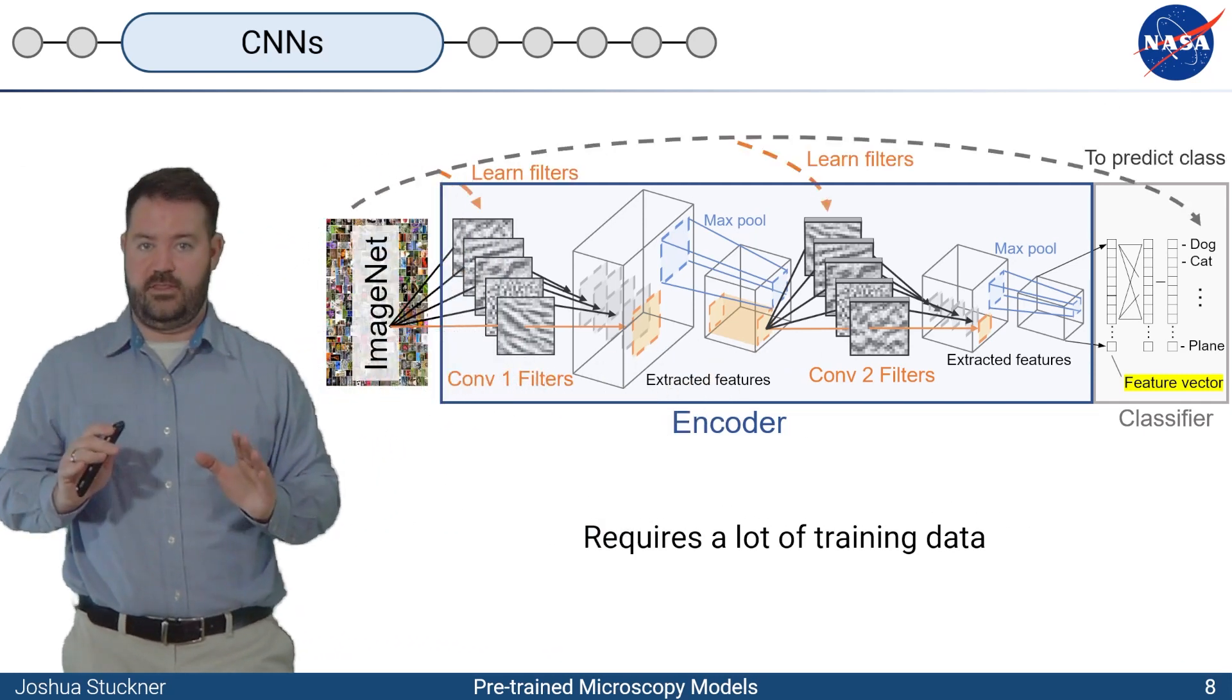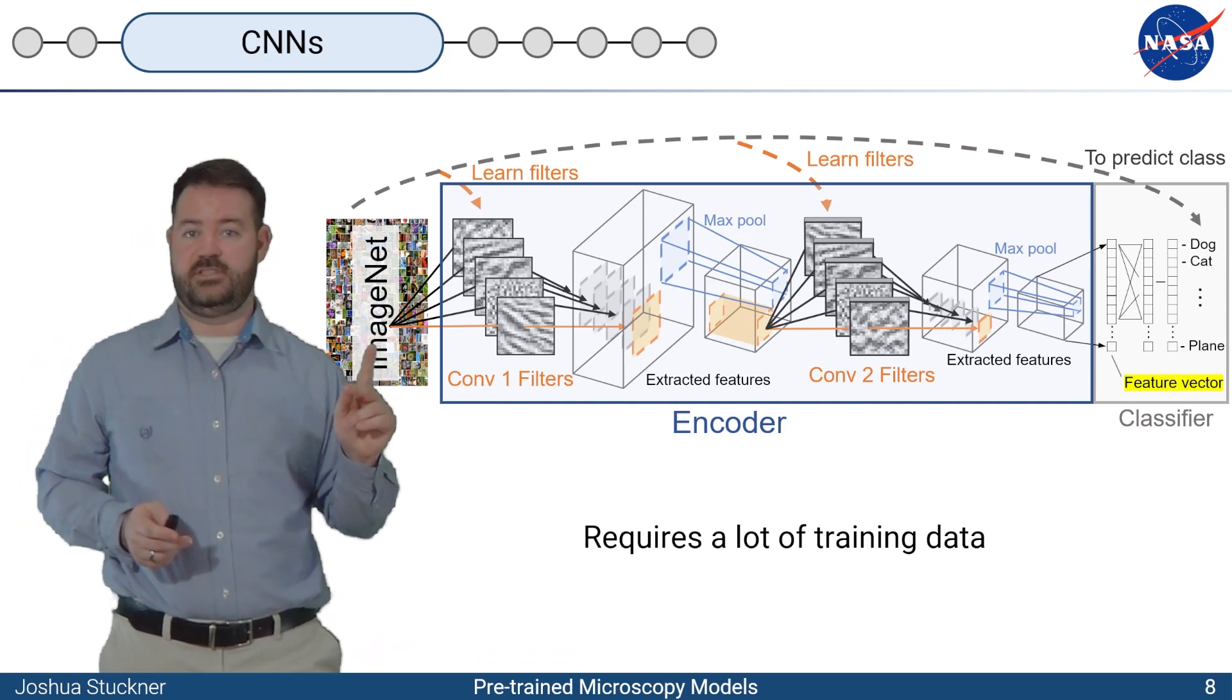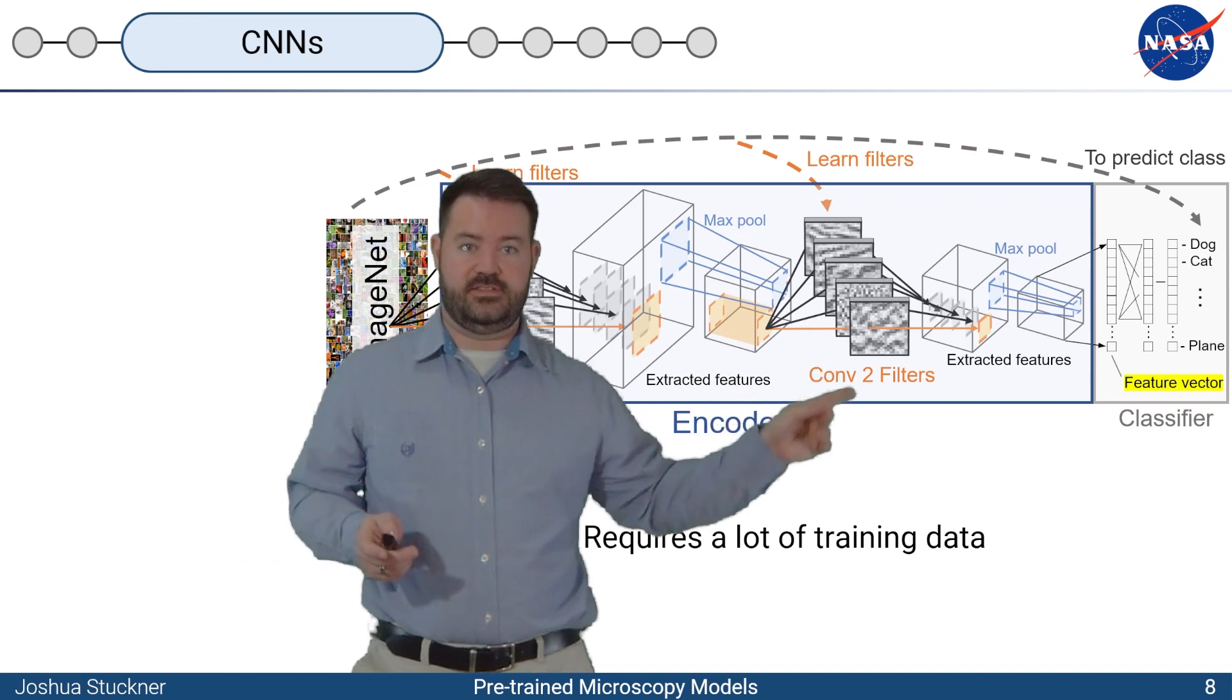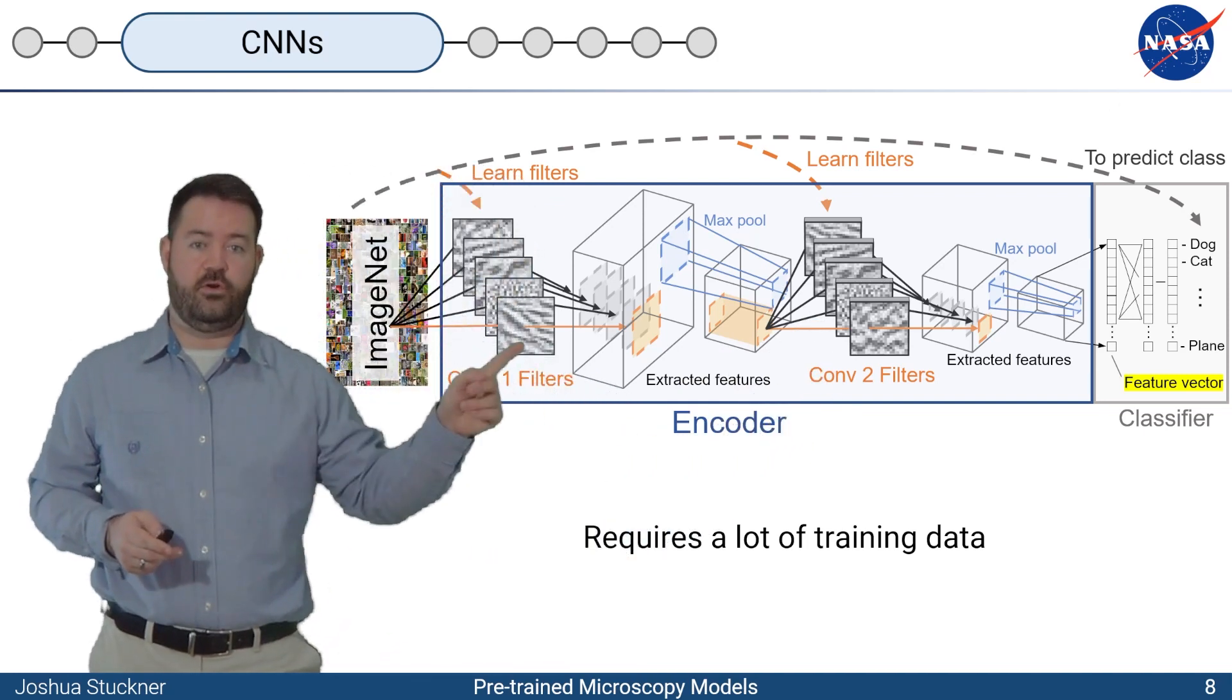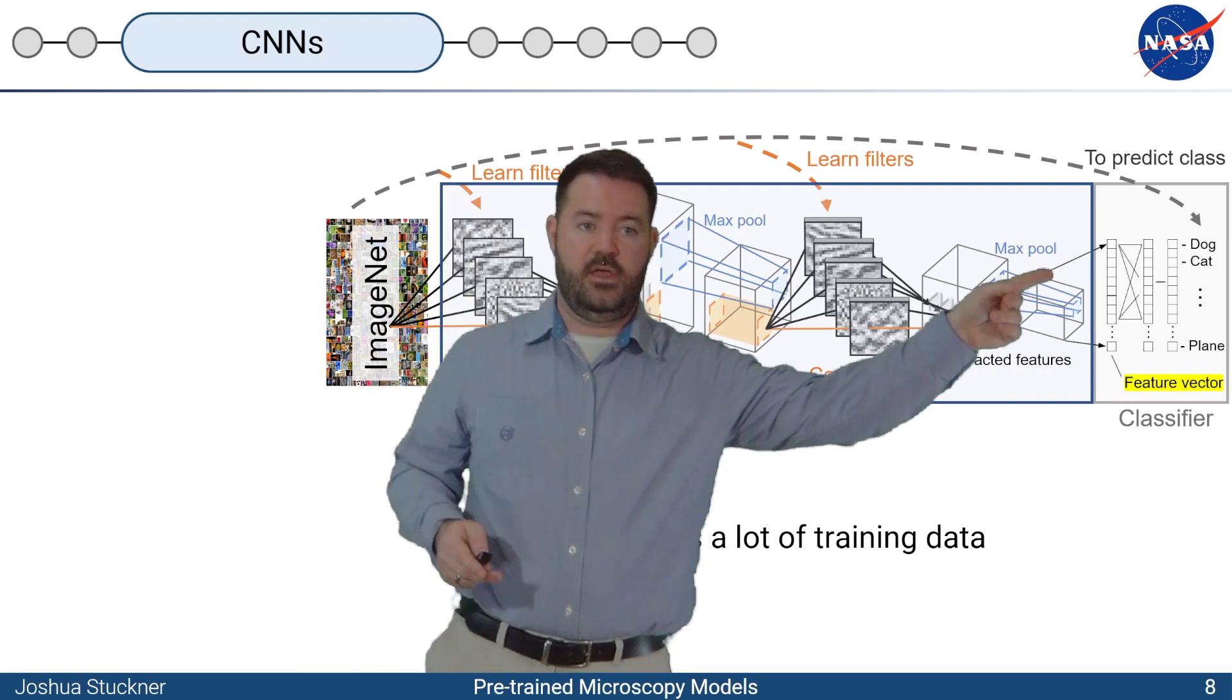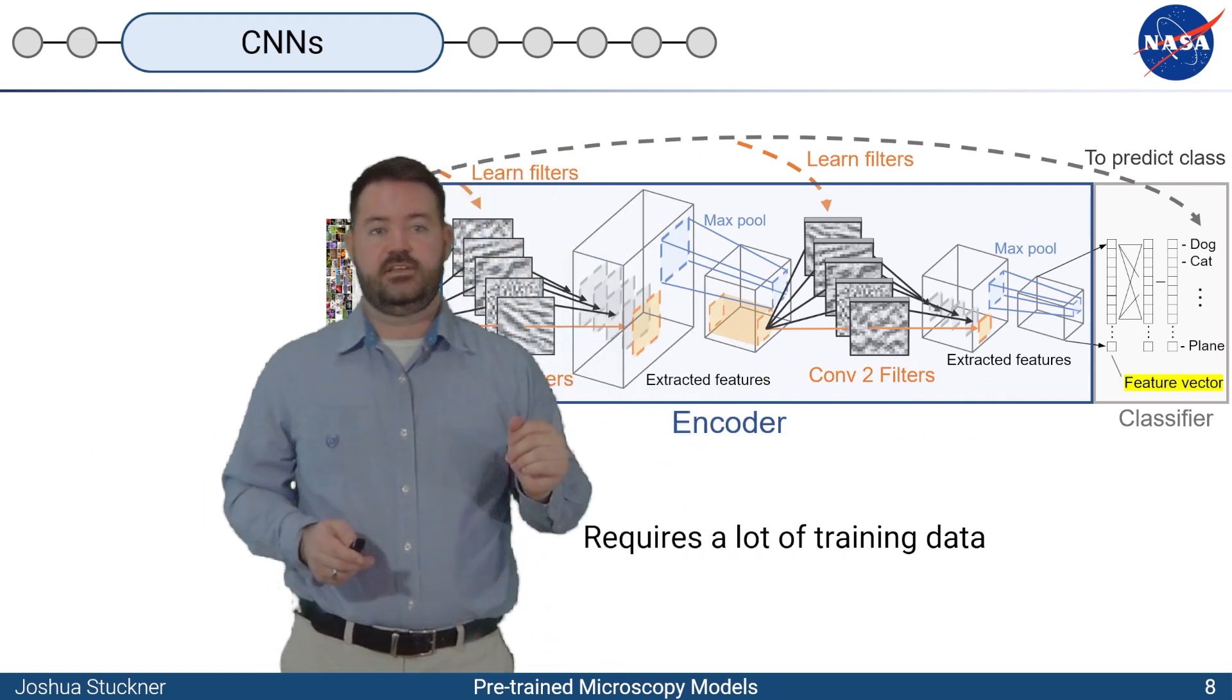What they do in the current state-of-the-art is pre-train these encoders on a dataset called ImageNet, which is millions of images of everyday life of cats, dogs, and they tell the model to predict this is a dog, this is a cat. So you feed it the input-output pairs and the model learns filters here in order to make good predictions with the classifier. It learns a good feature representation here, it learns filters to produce a good feature representation that can then be used to predict the class.